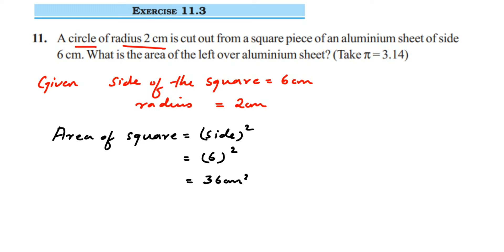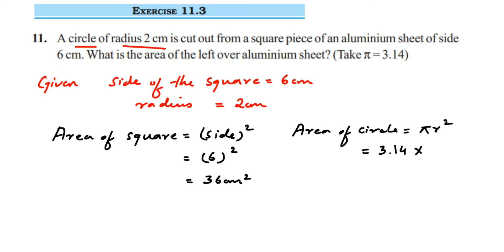Next, area of circle equals pi r squared. In the question they have given pi as 3.14 — in case it is not given, you can take 3.14 or 22 over 7. So 3.14 multiplied by r squared, which is 2 squared equals 4. So 3.14 multiplied by 4 gives us 12.56 centimeter square.